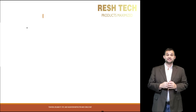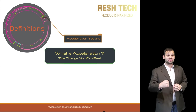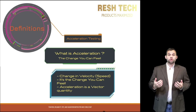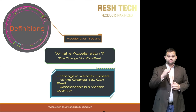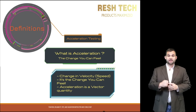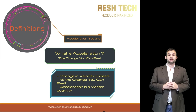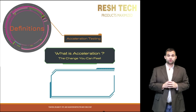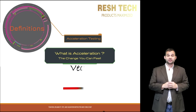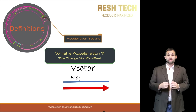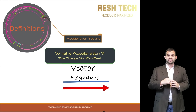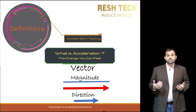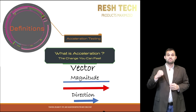So what is acceleration? Acceleration is the change you can feel. When you change position, also known as displacement, you can see the change. But change in velocity or speed is something you can feel in your chest, especially if it is a significant amount of change in velocity. Acceleration is a vector quantity, which means that it has a magnitude and direction component. In vibration testing, however, we usually talk in terms of gravitational units, which are expressed only in the magnitude component.